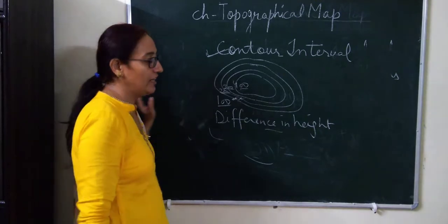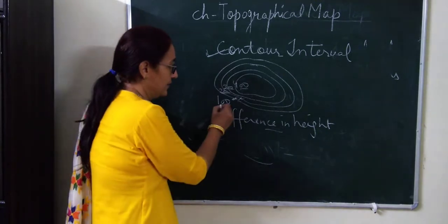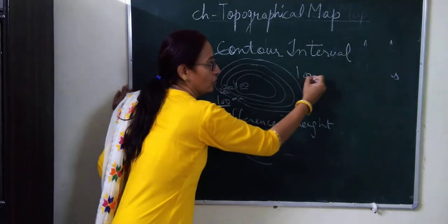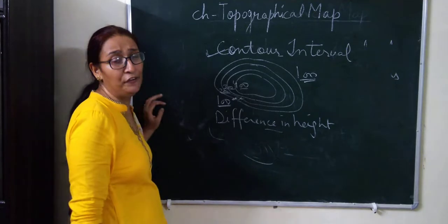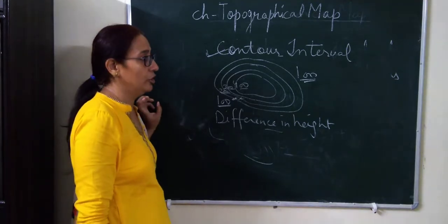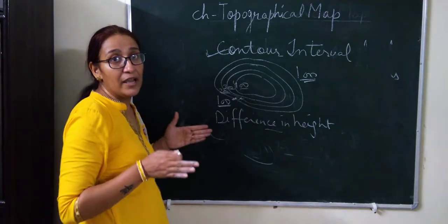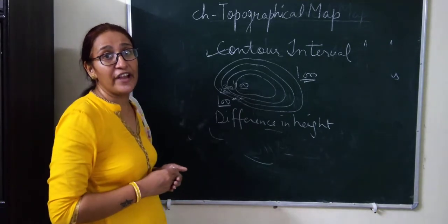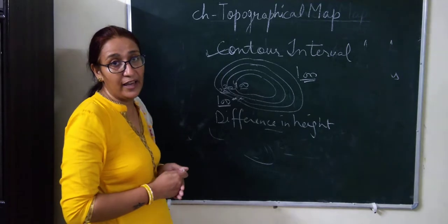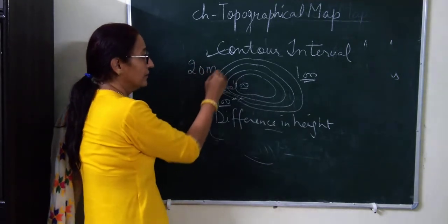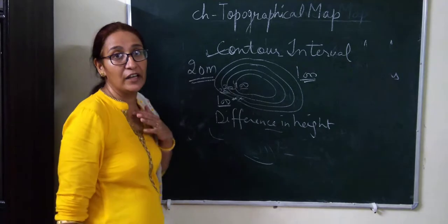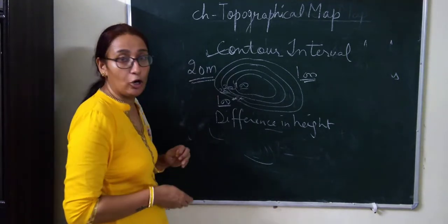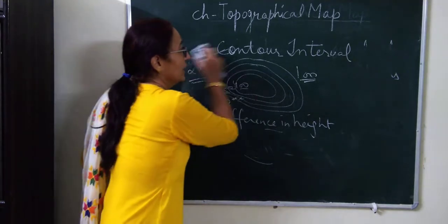Here the contour interval is 100 meters — between 200 and 300, the difference in height is 100 meters. In our topographical map given in the book, the fixed contour interval is 20 meters. That is the standard contour interval given in our topographical map.